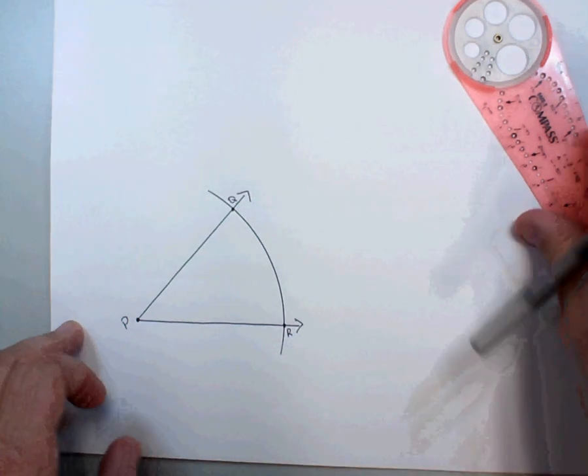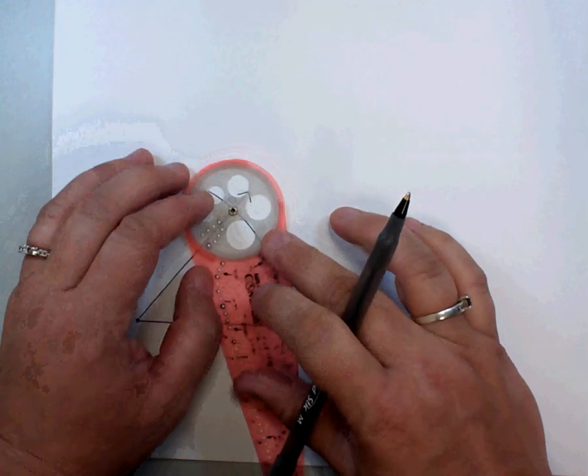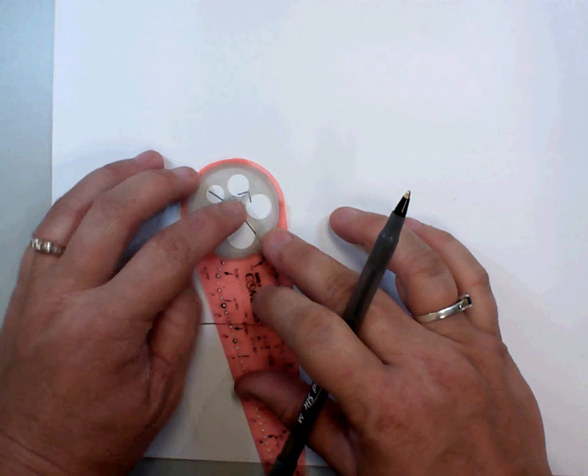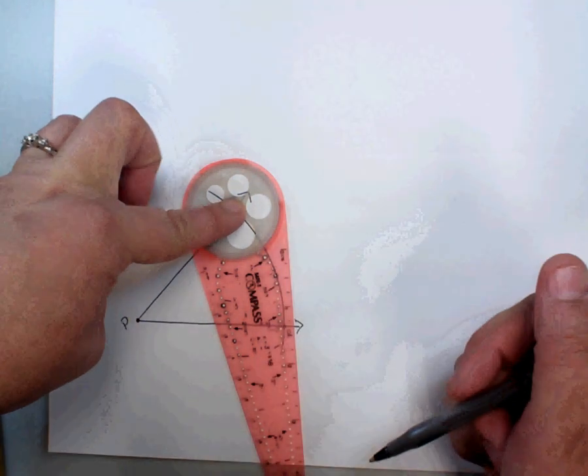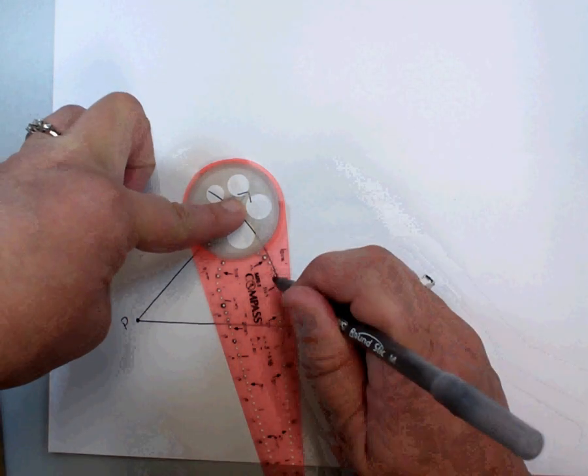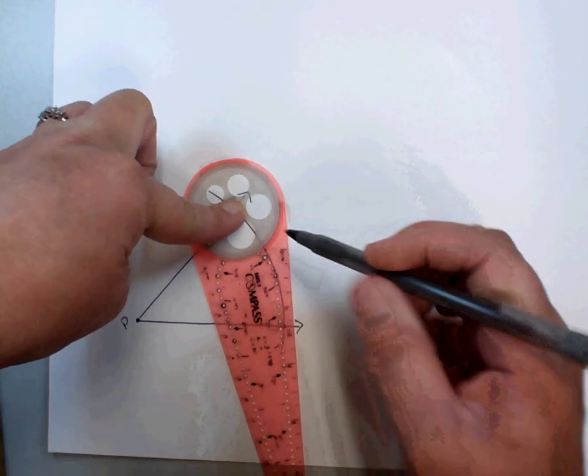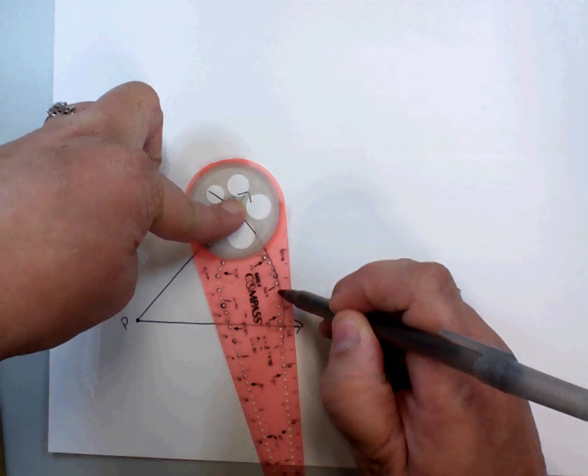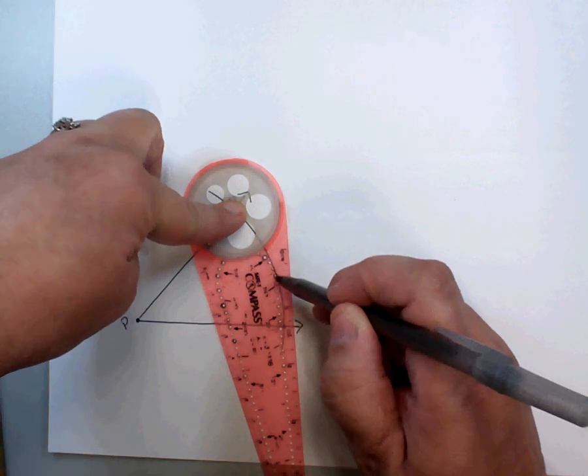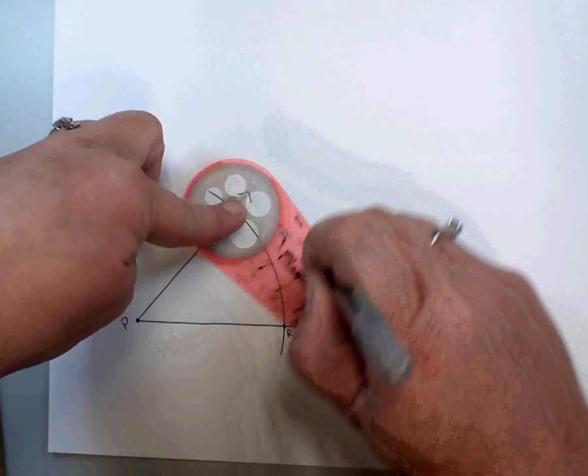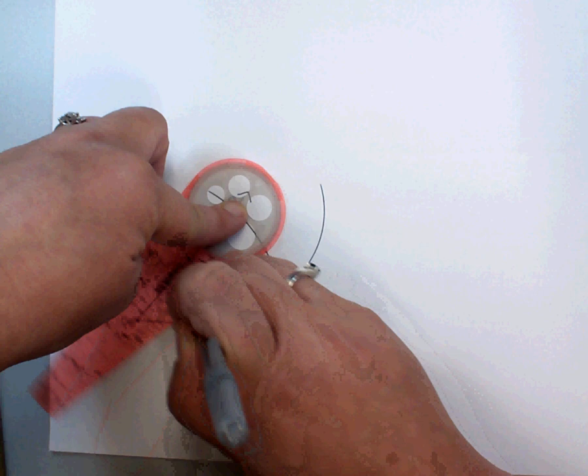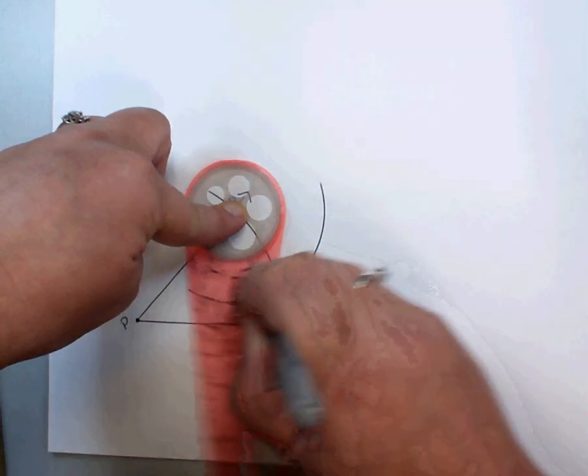So then we're going to put our metal hole at point Q, and we're going to draw an arc in the interior of the angle. So we're going to put it somewhere in here, preferably just a little bit over half if you can. And we're going to make it above and below the original arc.